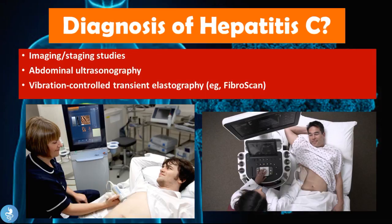Another way to diagnose Hepatitis C is to evaluate the structure of the liver using imaging or staging studies. These include abdominal ultrasound or vibration-controlled transient elastography such as the Fibromax or FibroScan. These devices can tell us how far the disease has progressed — whether we have fibrosis, liver cirrhosis, or development of hepatocellular carcinoma — and help stage the disease.